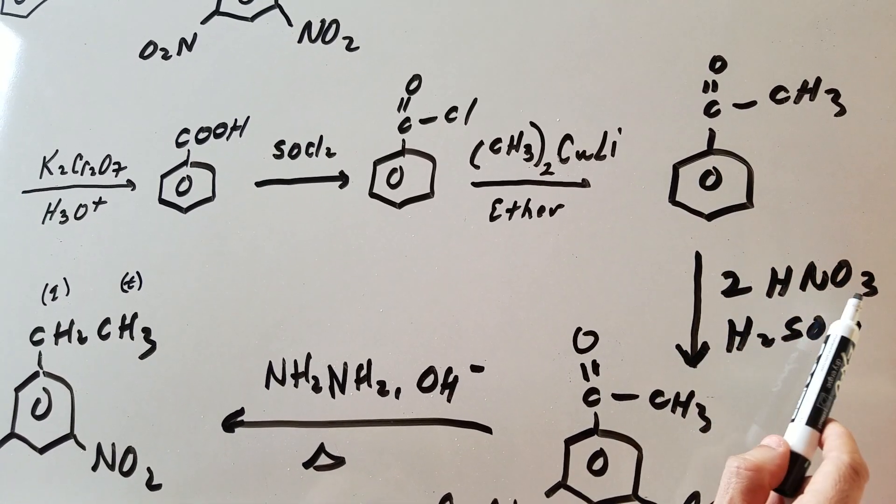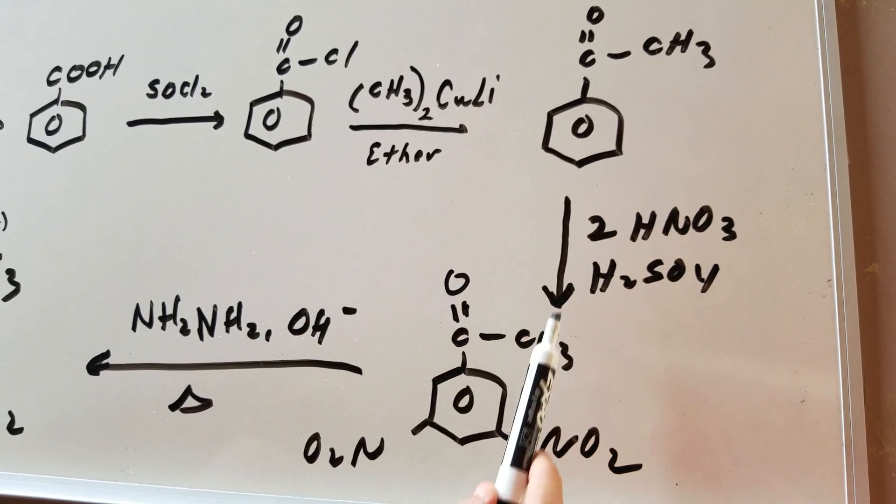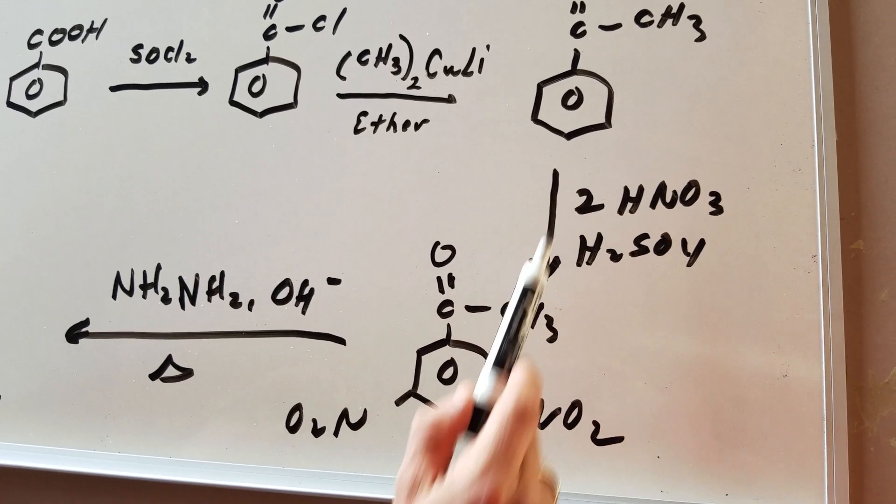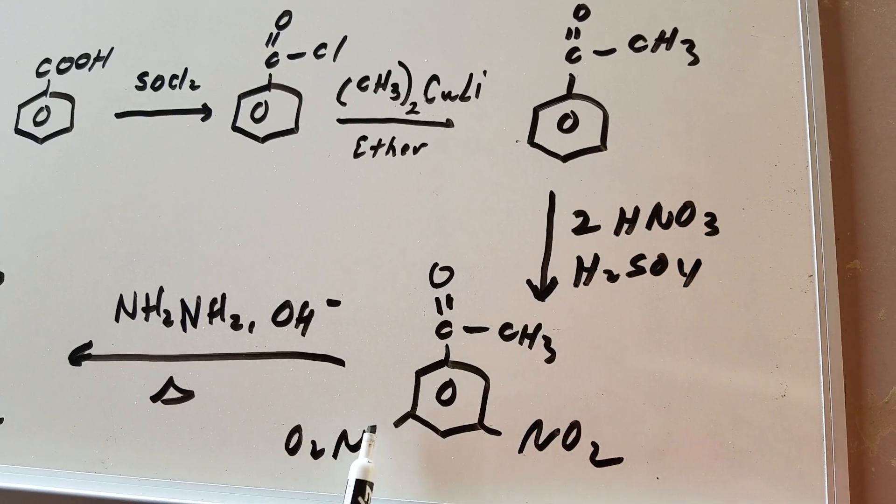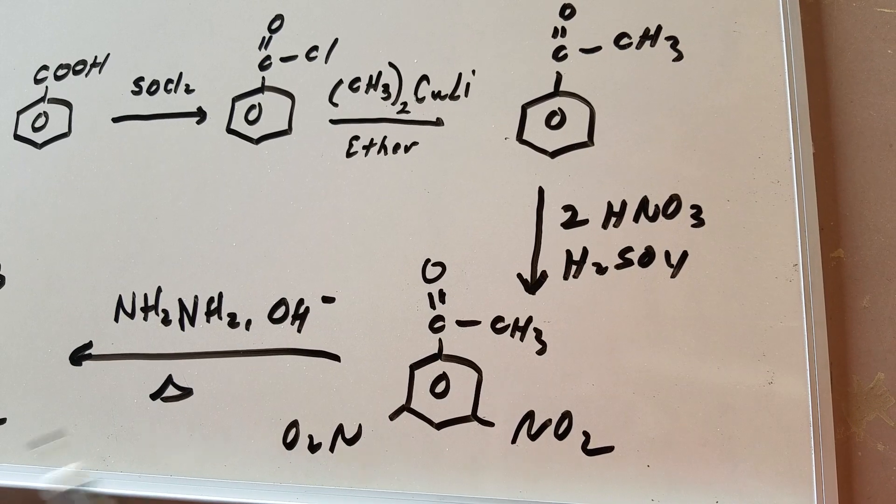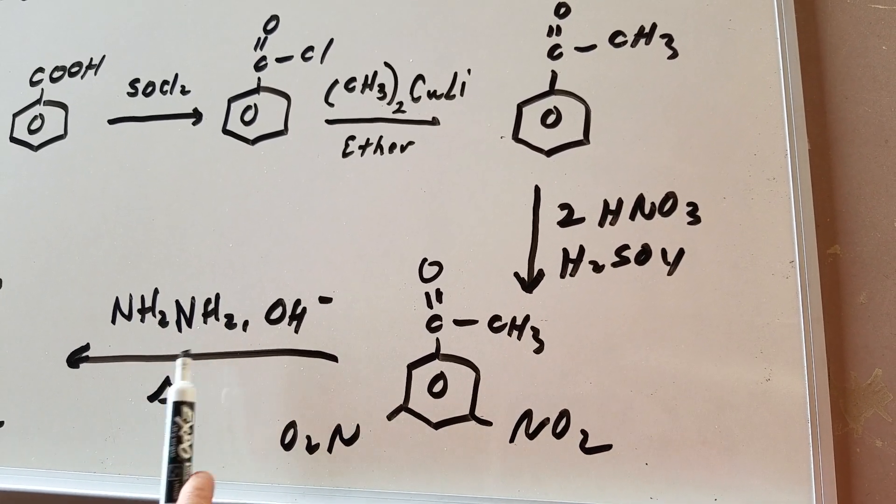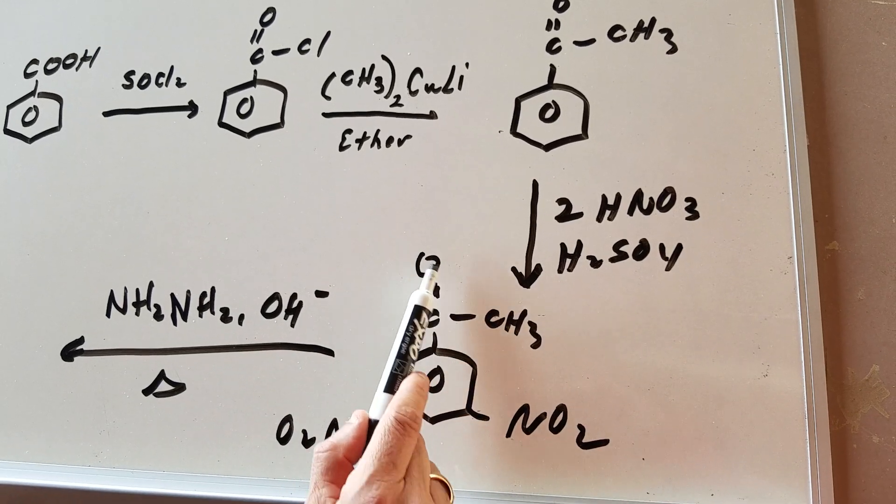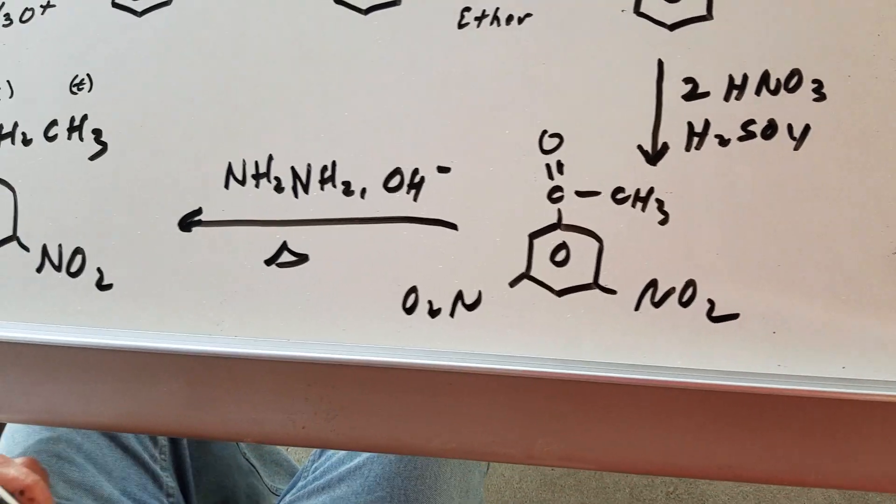Now, I'm going to nitrate acetophenone, which is this compound here. And when I nitrate it, I'm going to have this group direct the two nitro groups meta to each other. So now I got the two nitro groups in the meta position. The last step, I'm going to use the Wolff-Kishner. And the Wolff-Kishner is going to reduce down the carbonyl and spare the nitro to put on the ethyl group.